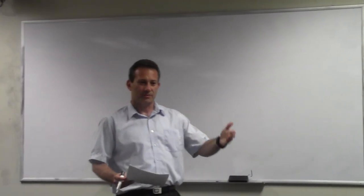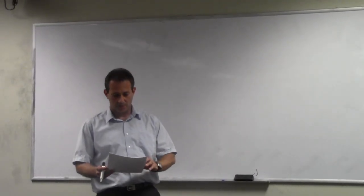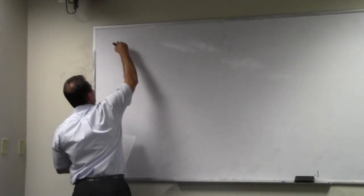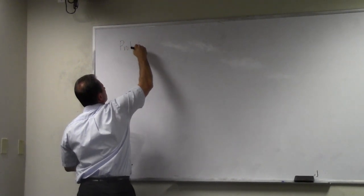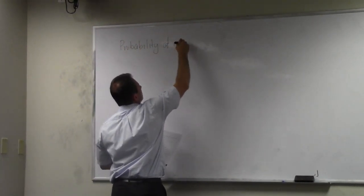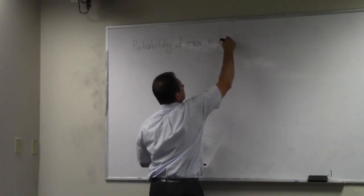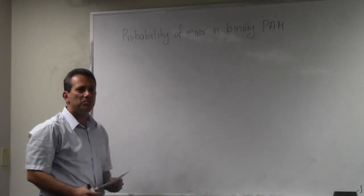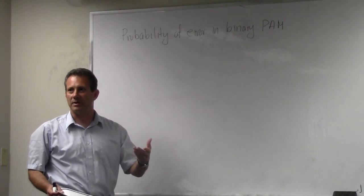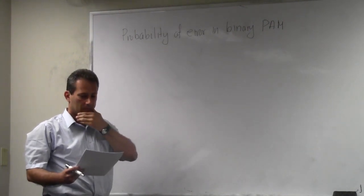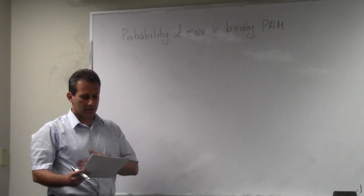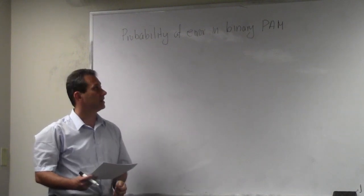We're going to start with the simplest possible example, and then a little bit more complicated, and then we'll understand better what the simulations are supposed to do. So the first one I'm going to talk about is probability of error in binary pulse amplitude modulation. Now, binary PAM is the same as BPSK — that's the same thing. If you have just two phases, then you end up on a real axis, therefore you're not really signaling in two dimensions, but in a single dimension.